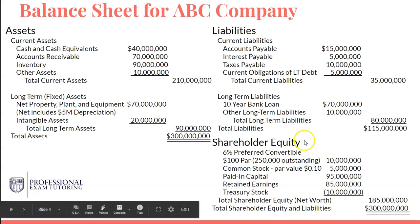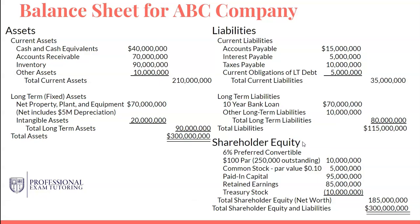Now we move on to the shareholders' equity section. Think about how you start a business: you need to infuse it with cash that comes from one of two places. One is investors — equity — which is investors or yourself putting cash into the business that you may or may not get back. The second is through loans, which we covered in the liabilities section. Liabilities are money you expect to pay back over time because you have a contractual obligation with the lender.